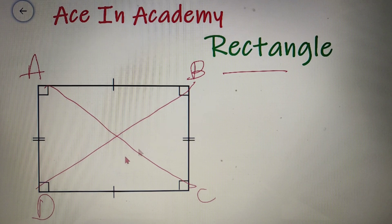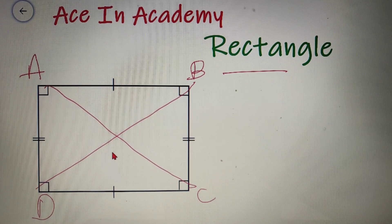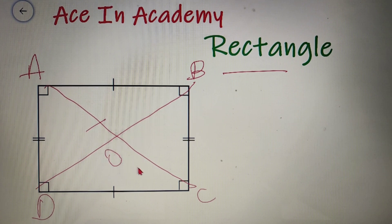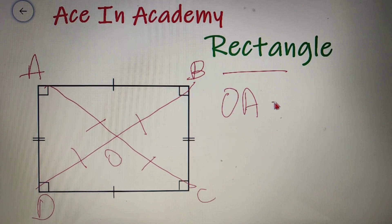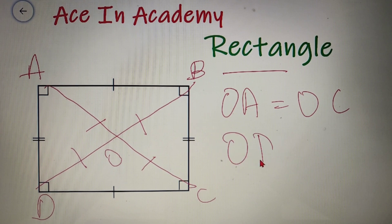The second property of a rectangle is that the diagonals bisect each other. If I name this intersection point as O, then I can say that OA is equal to OC and OD is equal to OB.